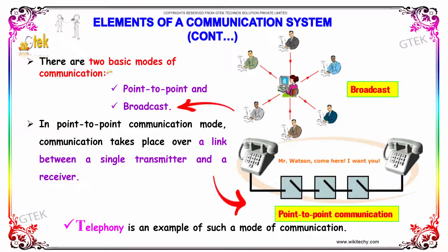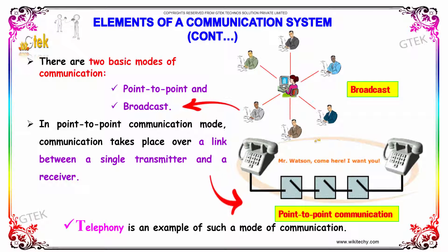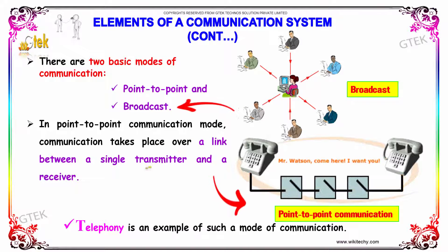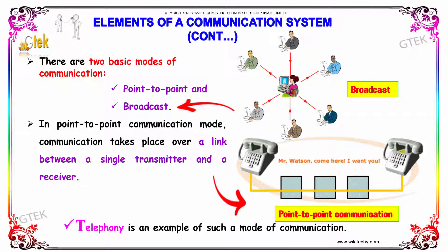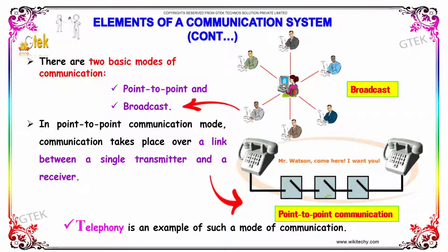There are two basic modes of communication: point-to-point and broadcasting. In point-to-point communication mode, the communication takes place over a link between a single transmitter and a single receiver. Telephony is an example of such a mode of communication.